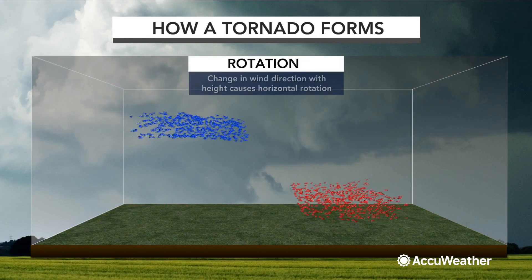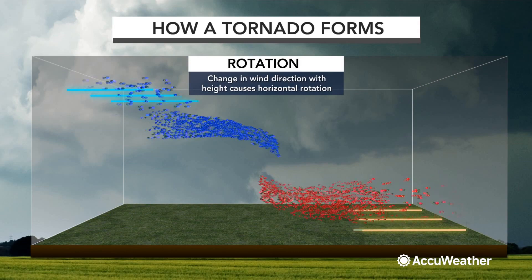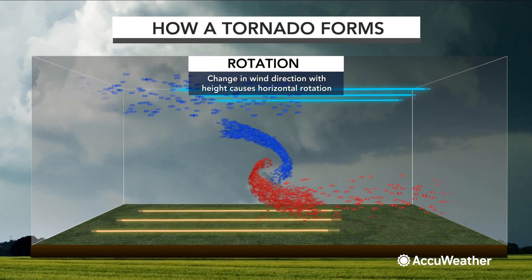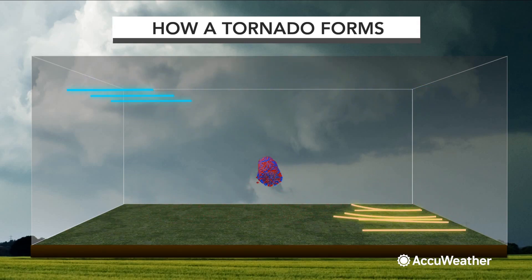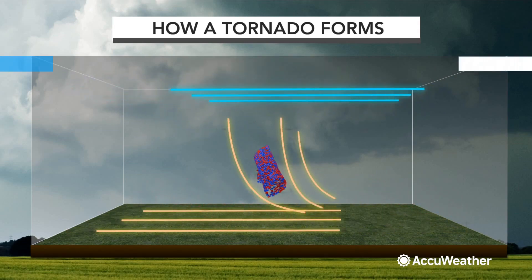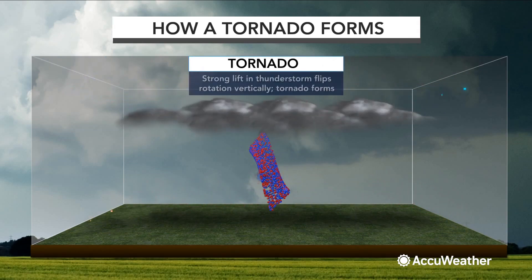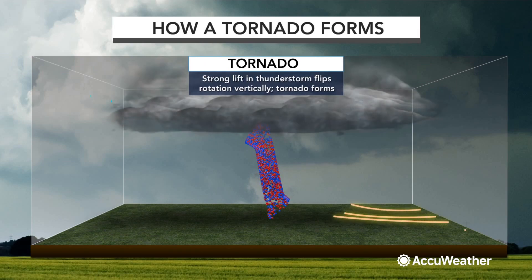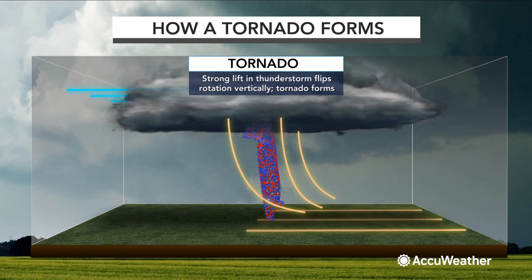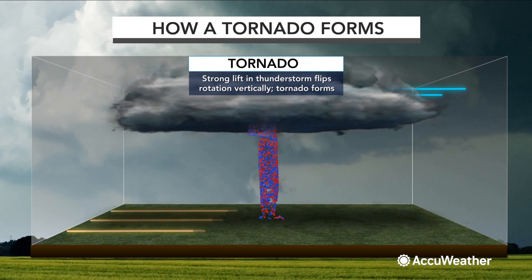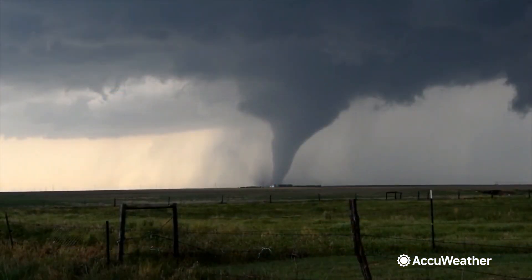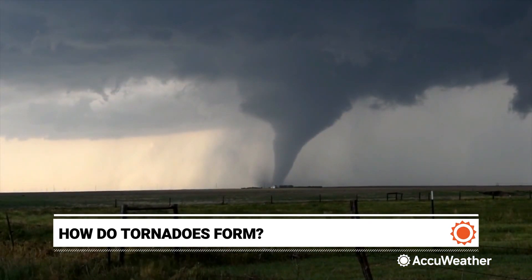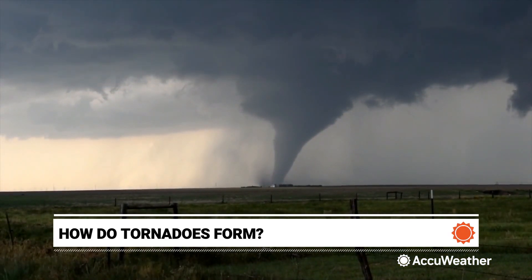That causes those rotating updrafts called mesocyclones, and tornadoes descend down from the mesocyclone. Tornadoes are most common on flat terrain and during warmer seasons because all those ingredients are present at this time.